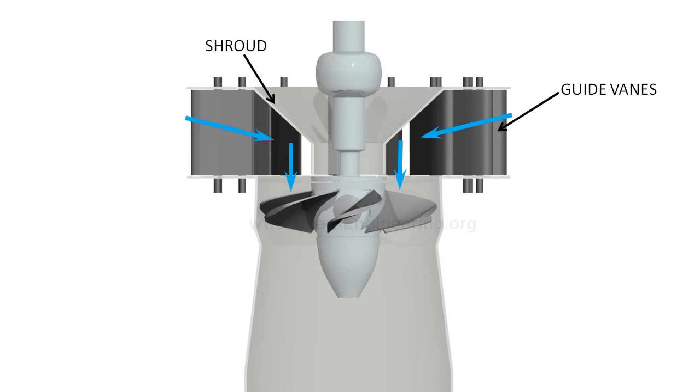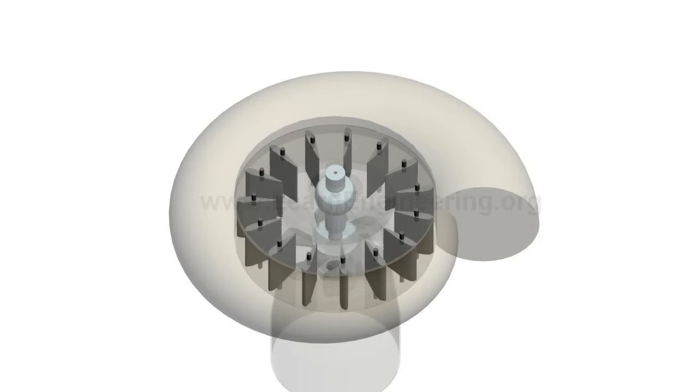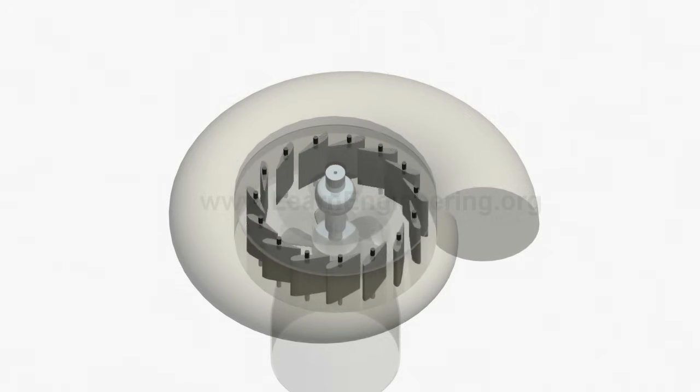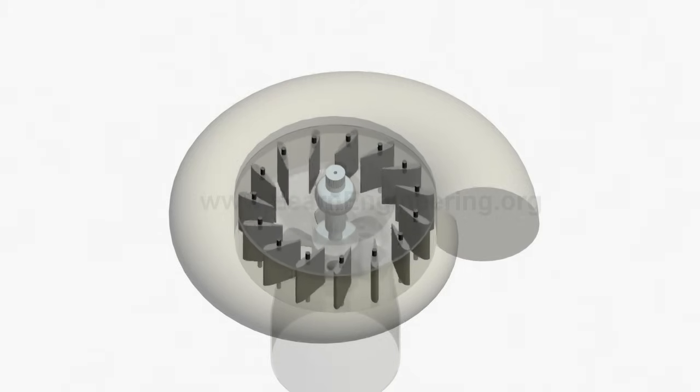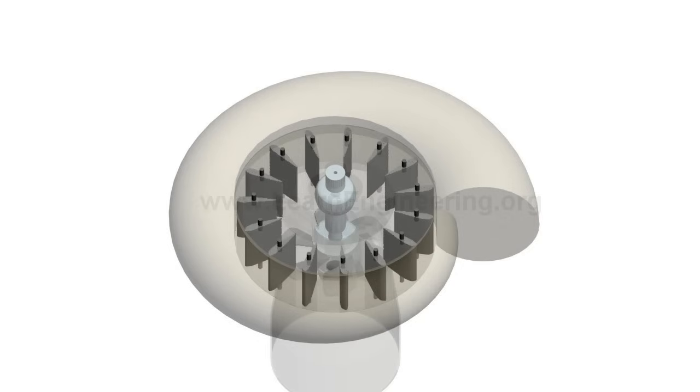Power demand may fluctuate over time. A governing mechanism, which controls position of guide vanes, is used to control water flow rate. This can meet varying power demand.